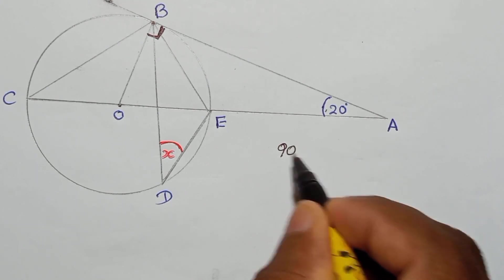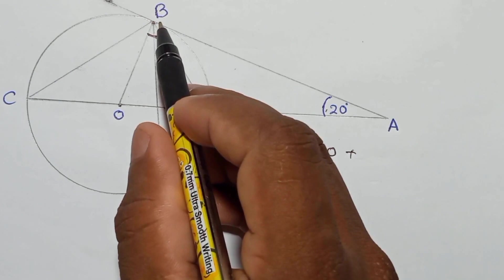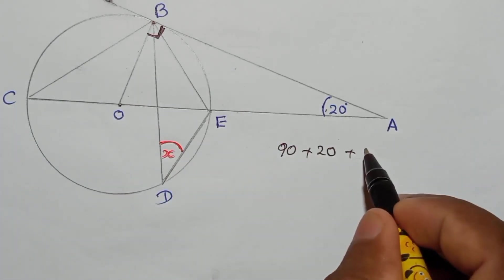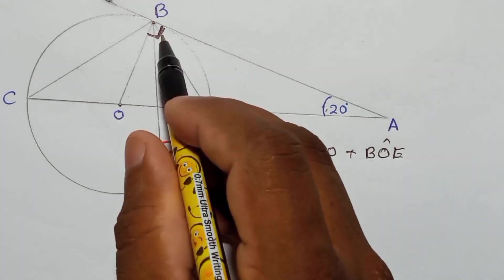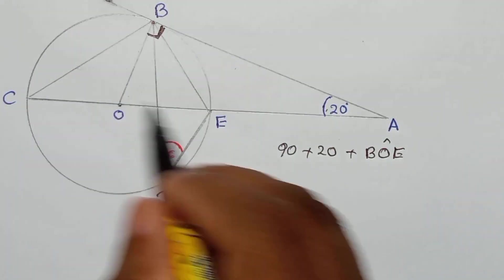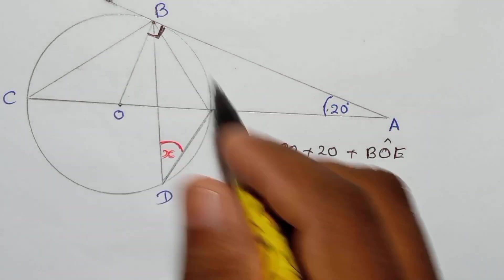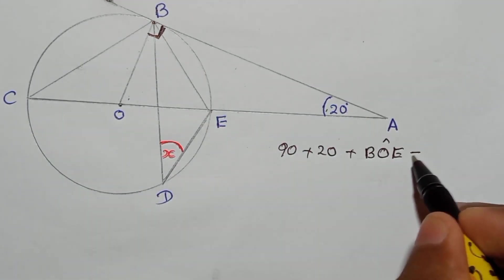90 plus 20 plus this angle, we can call it BOE. These three when you add them, we have learned the theorem that the total interior angles of a triangle should be 180. So this plus this plus this should be equal to 180.